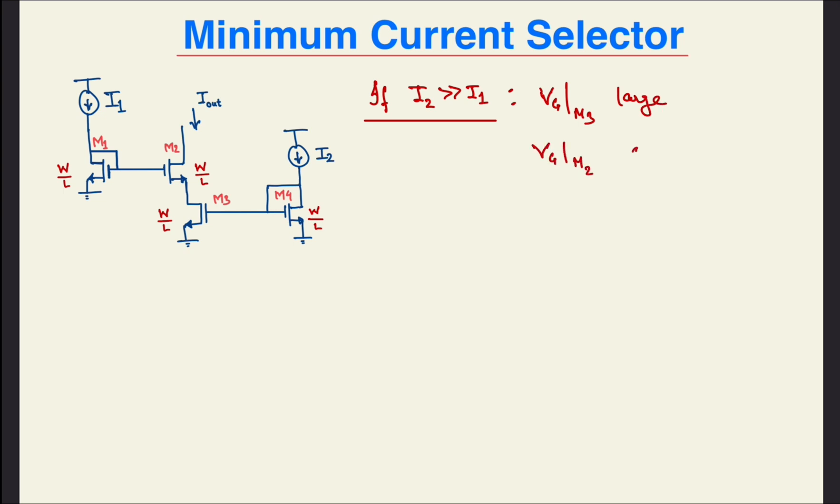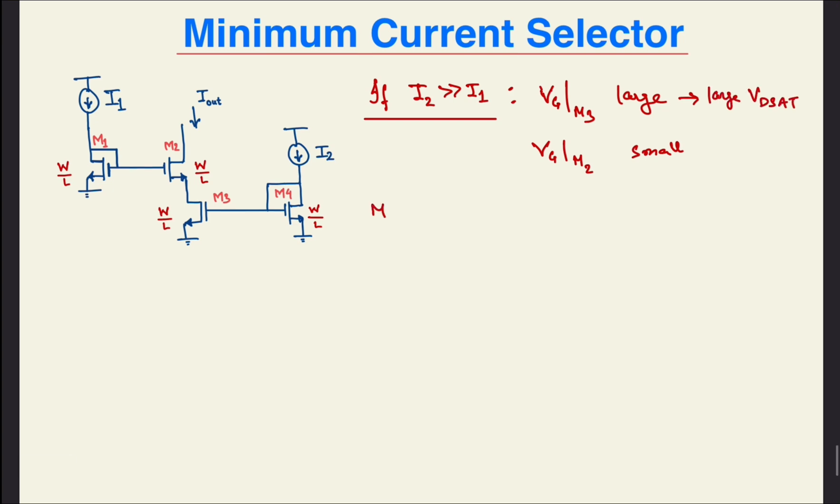Also, since I1 is small, the gate voltage and thus the source voltage of M2 would be small, pushing M3 into linear region. That means now M3 acts as a resistor. So, you can reduce the circuit into something like this.